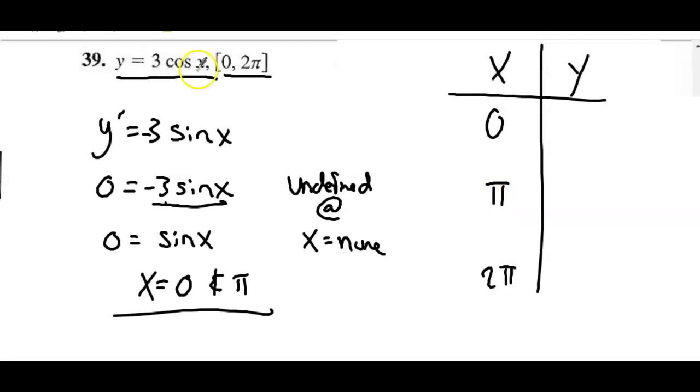So, if you plug 0 in here, cosine of 0 is 1, and 1 times 3 would be 3. If you plug in pi, cosine of pi is going to be negative 1, and negative 1 times 3 is negative 3. 2 pi, cosine of 2 pi, well, it's the same thing as cosine of 0, which is 1, so 3 times 1 is 3.